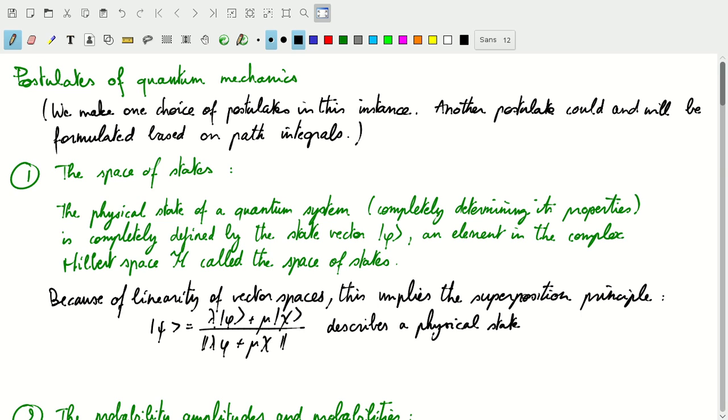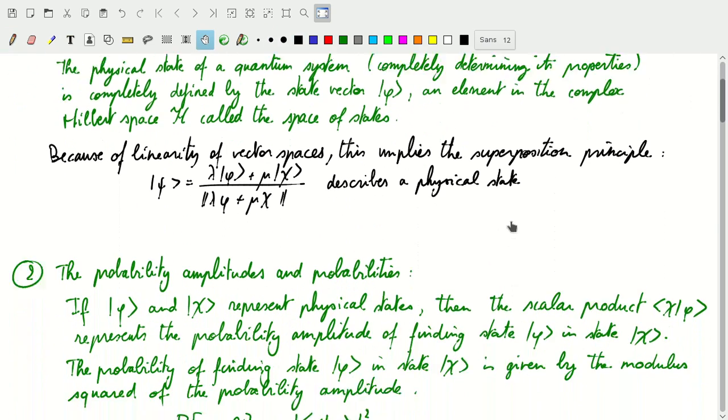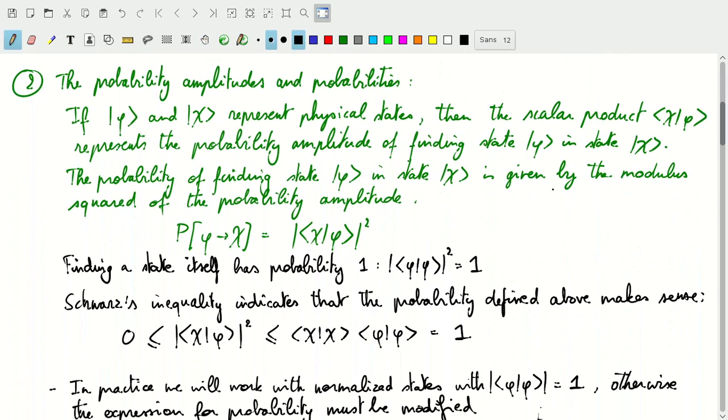I've already included here the normalization by dividing the linear combination with lambda and mu by the norm of the sum of those states. So that was all the first postulate, basically defining what the space of states is and defining a connection between the physical world and the mathematical description of the quantum system.